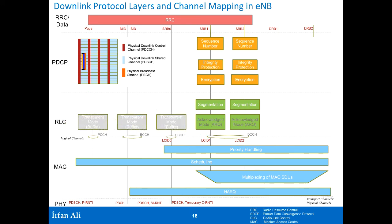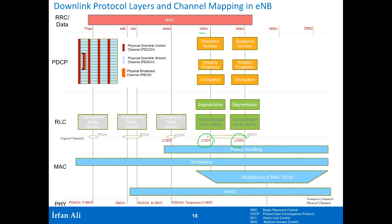Messages sent on SRB1 are given logical channel ID 1, and messages on SRB2 are given logical channel ID 2. These are then sent down to the MAC layer for multiplexing.